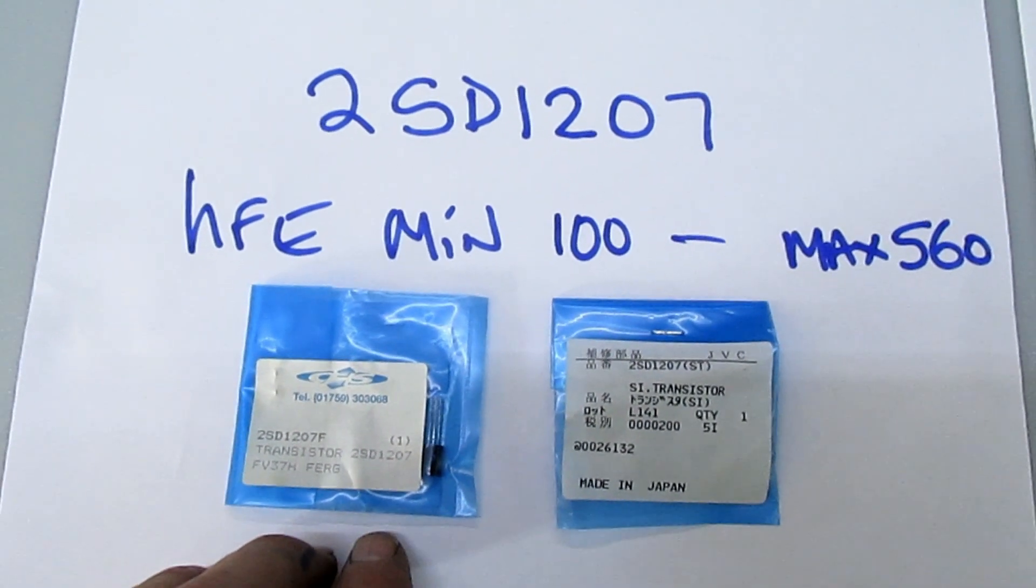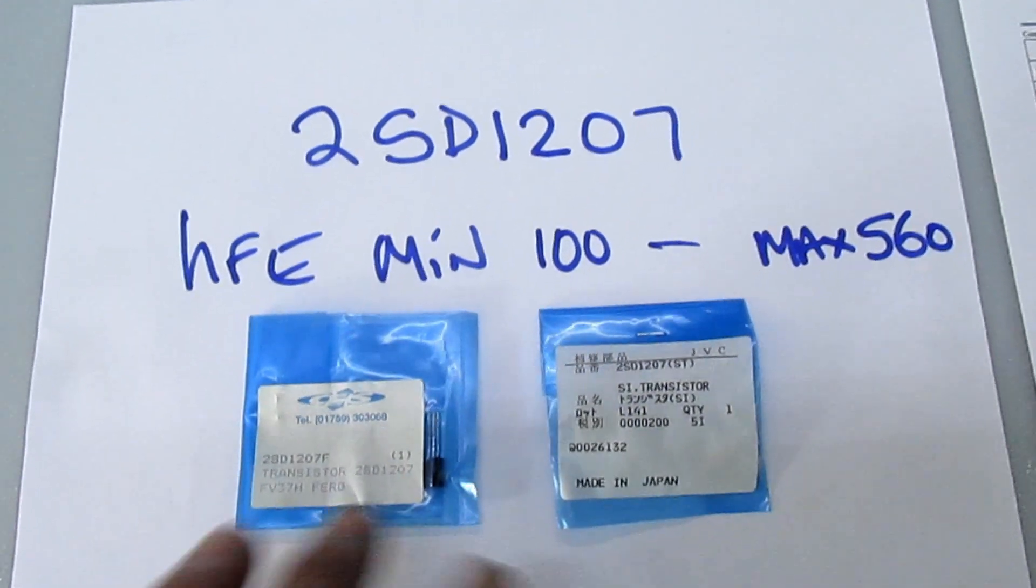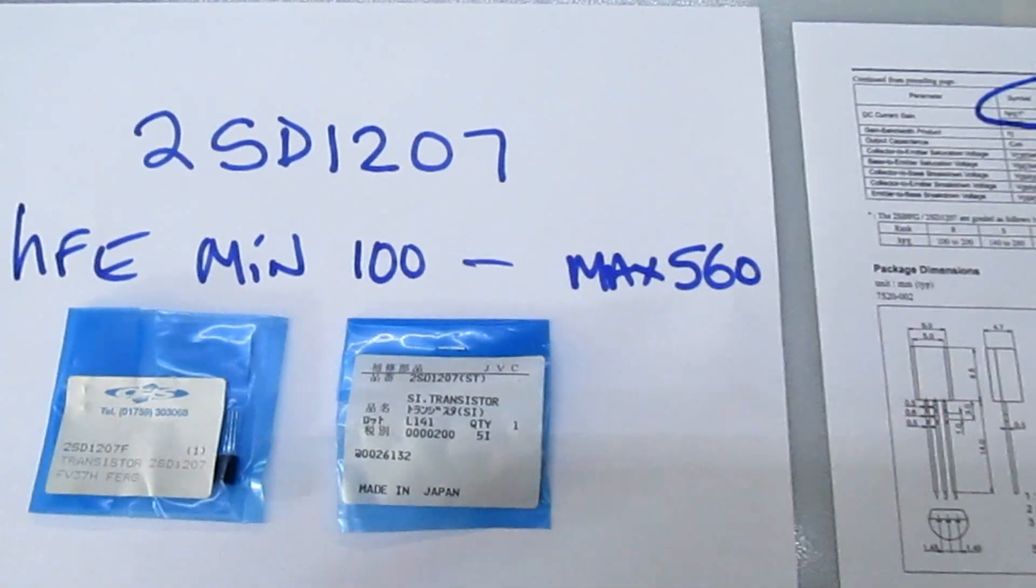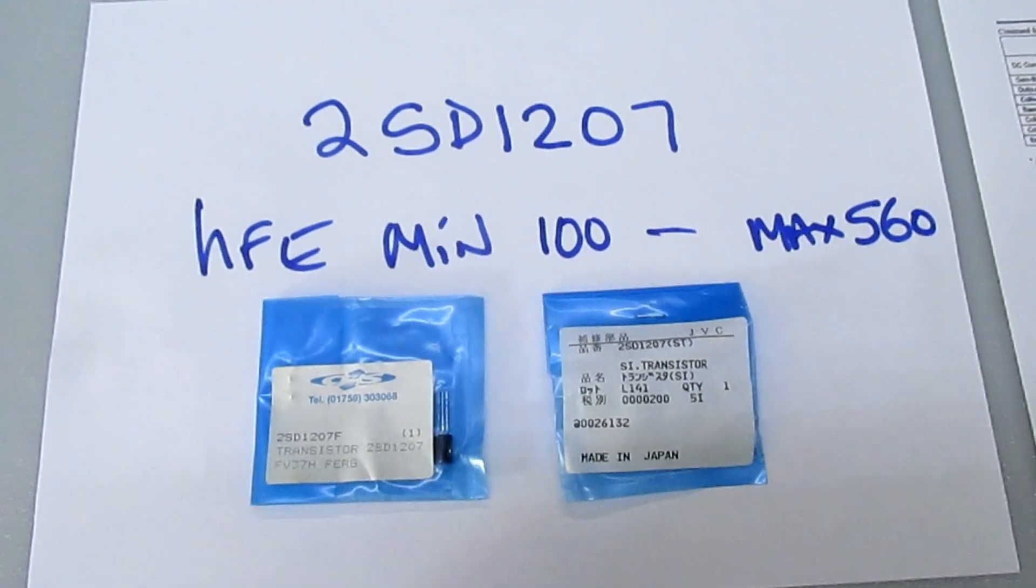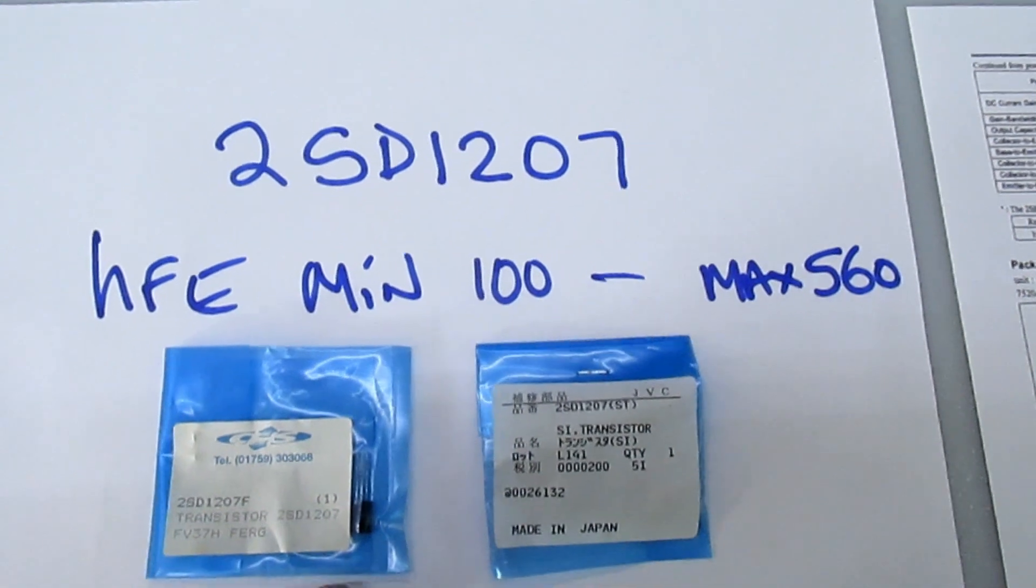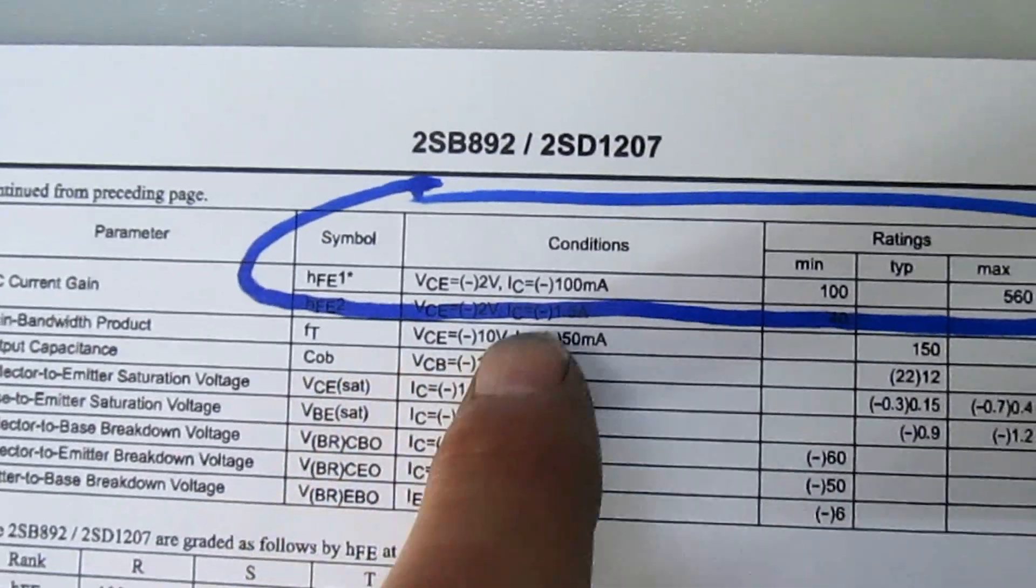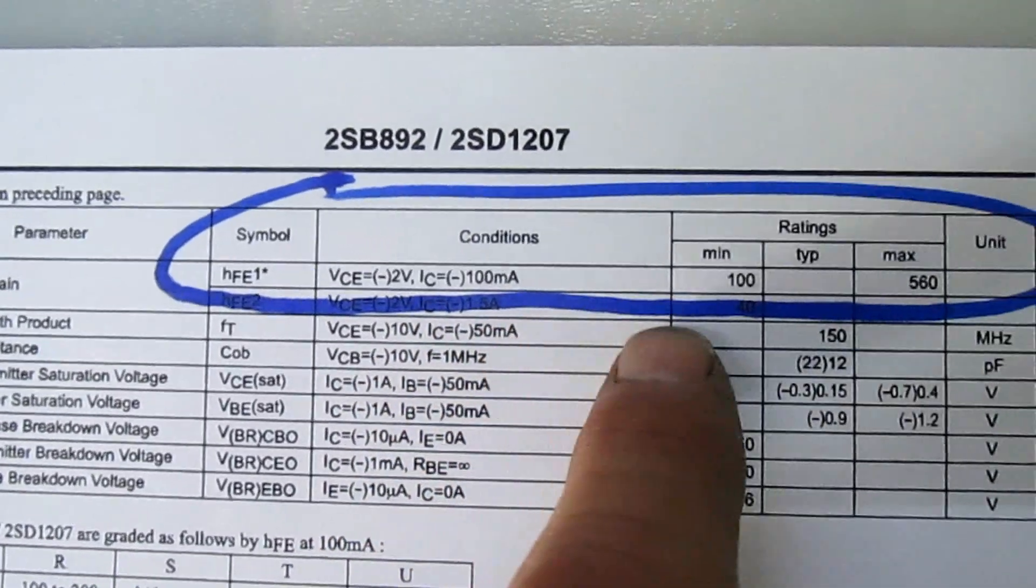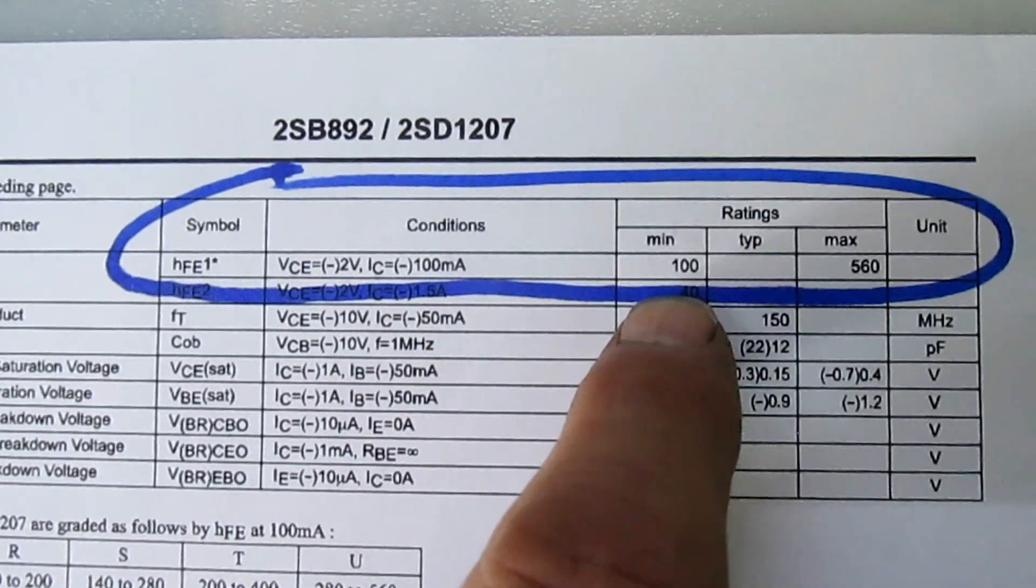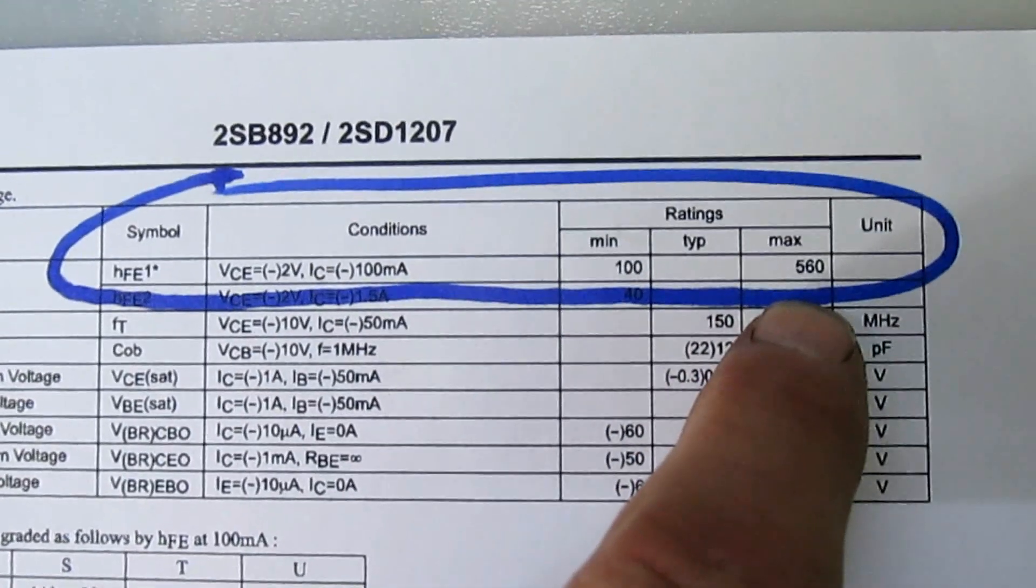When these are manufactured they go through a lot of different tests. Taking one test as a typical example, we've got the DC current gain. If we move over the data sheet here, at 100 milliamp the guaranteed minimum DC current gain is 100 and the maximum is 560.